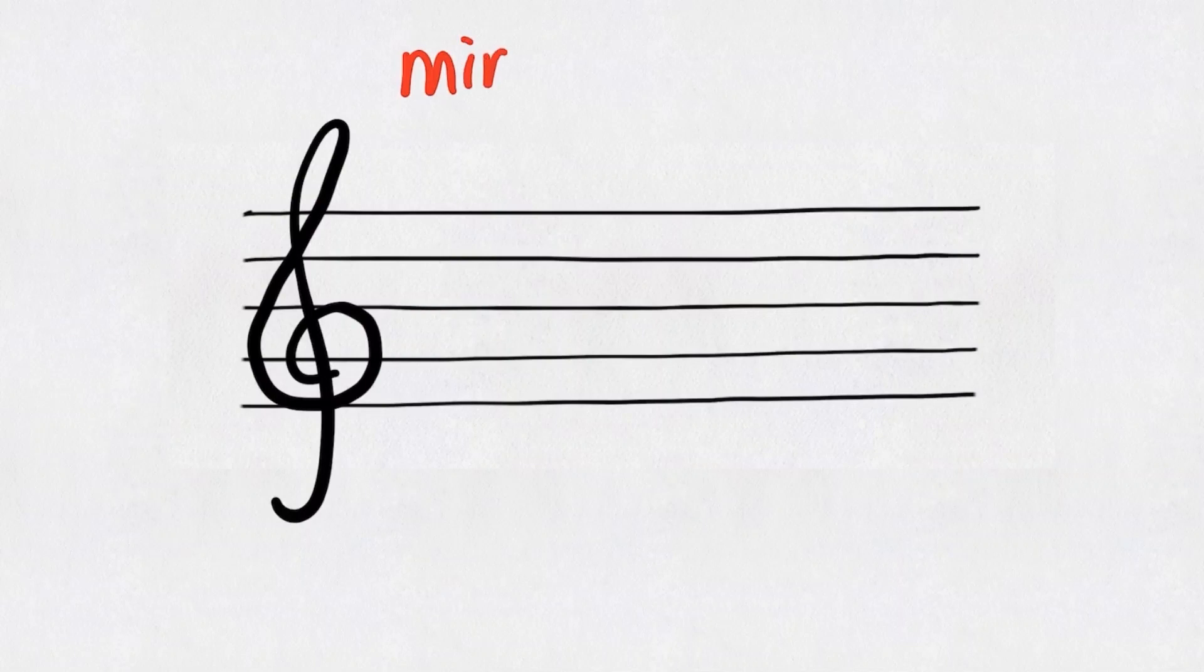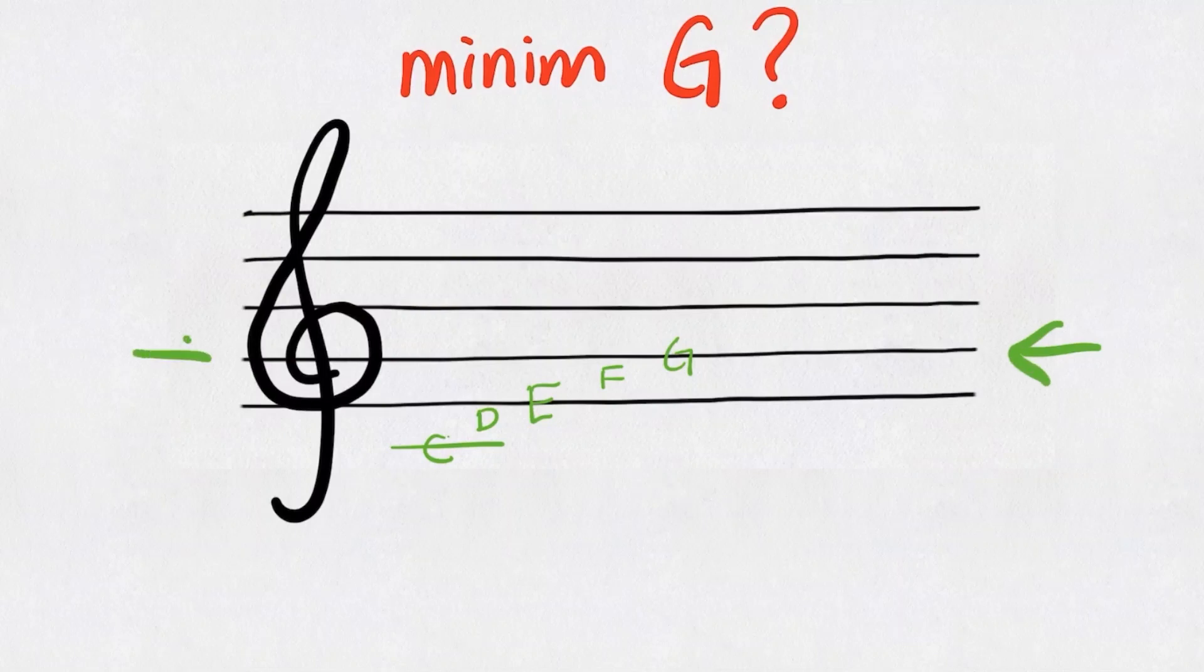Let's try another example. So here we have a treble clef. And let's say we want to draw a minim G. Because it's treble clef, do you still remember the landmark note in the treble clef? The line where the G clef curls is the G line. Therefore, the G is right here. It's a minim. So we need to draw an empty note head here.